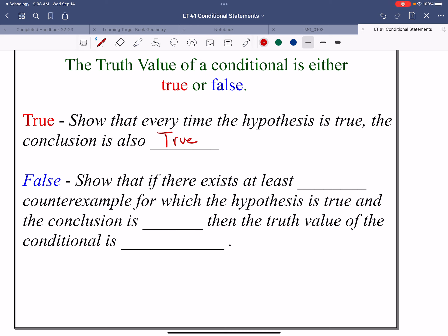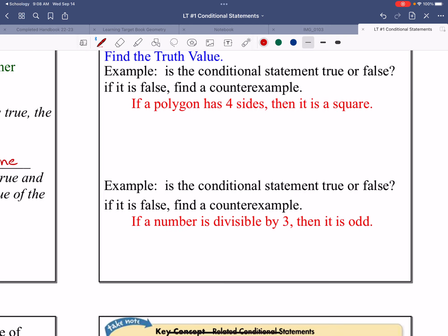It's false if you have to show that there exists at least one counterexample for which the hypothesis is true and the conclusion is false. Then the truth value of the conditional would be false. And so this is saying it only takes one counterexample, one example that proves it wrong to say that it is a false statement.